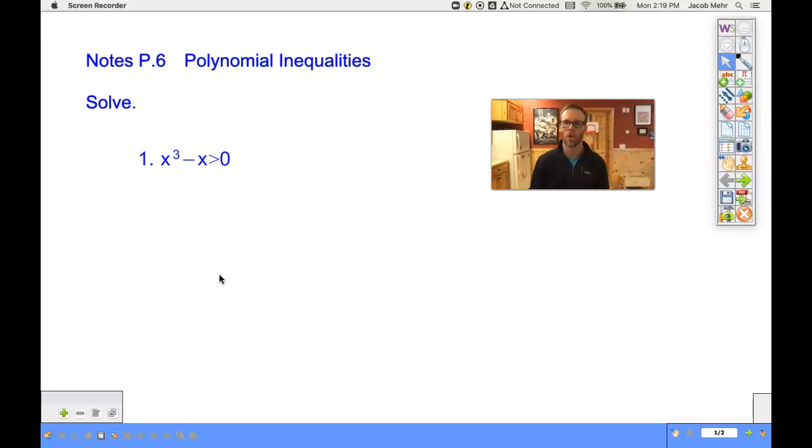Think back, how did we solve a quadratic inequality? If we wanted to know where something's greater than zero, we first find where it's equal to zero, we consider what the graph looks like, and then identify where on the graph it's greater than zero.